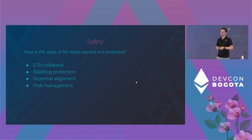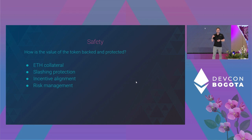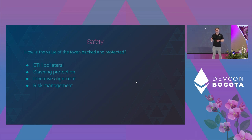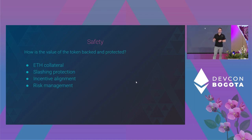The next consideration is safety. There is ETH backing the liquid staking token, so what mechanisms are in place to protect that collateral? Ethereum's proof-of-stake system is a very forgiving protocol, but it is possible to lose your stake either partially or in extreme cases fully. Safety mechanisms built into the protocol need to account for things like slashing protection, aligning incentives, and general risk management.